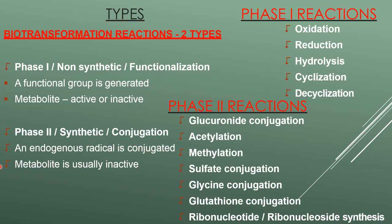Phase one reactions include oxidation, reduction, hydrolysis, cyclization, or de-cyclization. Phase two reactions include glucuronide conjugation, acetylation, methylation, sulfate conjugation, glycine conjugation, glutathione conjugation, and ribonucleotide or ribonucleoside synthesis.